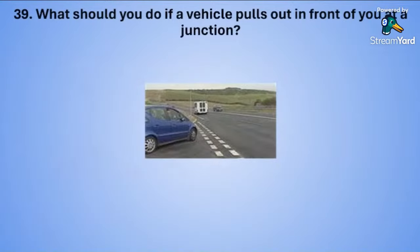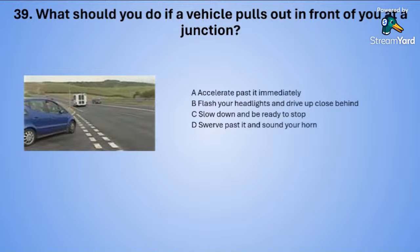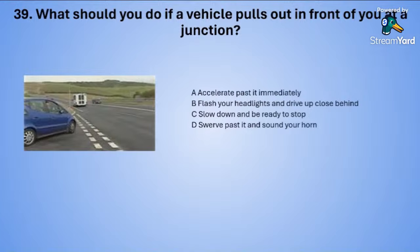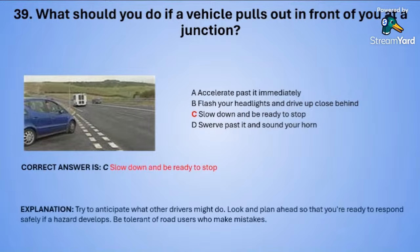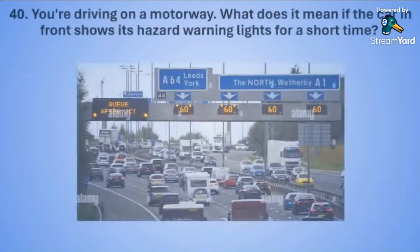Question thirty-nine: What should you do if a vehicle pulls out in front of you at a junction? A: accelerate past it immediately. B: flash your headlights and drive up close behind. C: slow down and be ready to stop. Or D: swerve past it and sound your horn. The correct answer is C — slow down and be ready to stop. Try to anticipate what other drivers might do. Look and plan ahead so that you are ready to respond safely if a hazard develops.